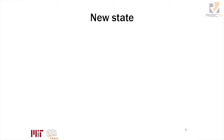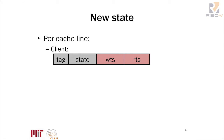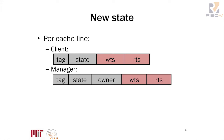To incorporate TARDIS, we need to add new state. For each L1 private cache line, we add two timestamps: wts and rts, which mark the start and end of the lease — the write timestamp and the read timestamp. The manager also tracks wts and rts per cache line. For each core, we add a register called pts, which tracks the position of this core relative to the data stored in its private cache.